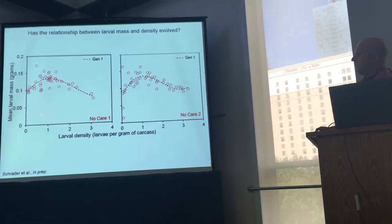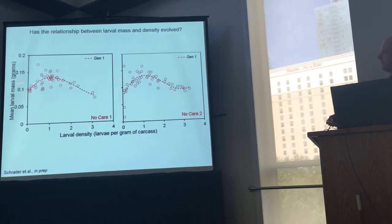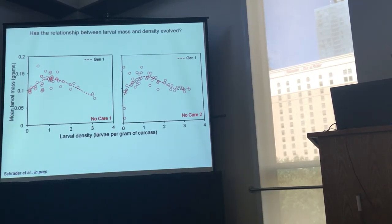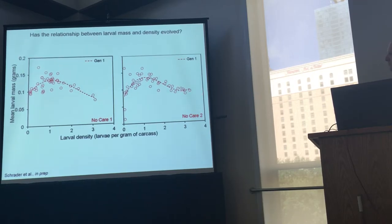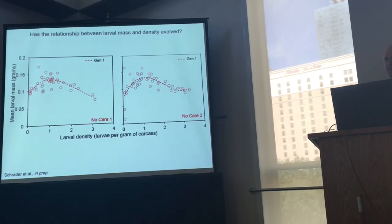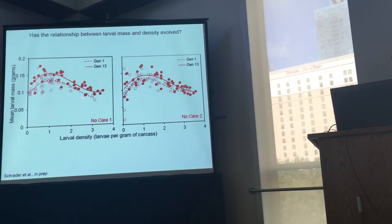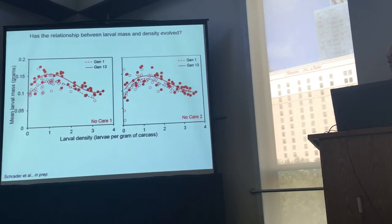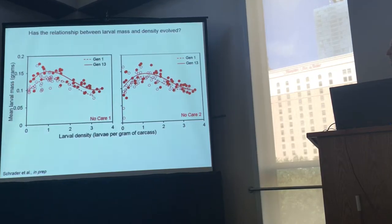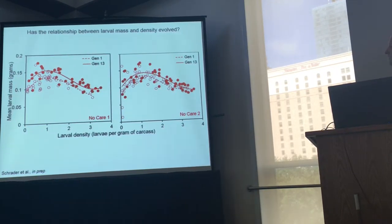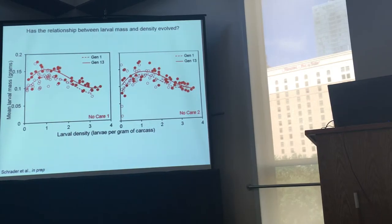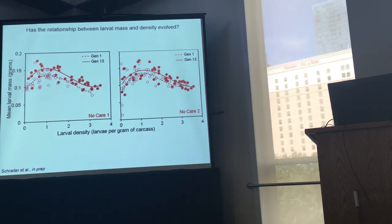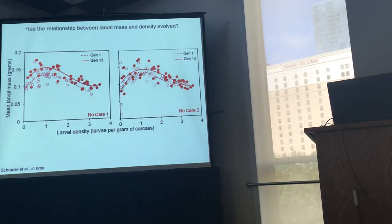To look at that, I've just plotted — I did this last week — mean larval mass against larval density in the first generation of the experiment. This is the same hump-shaped relationship we described in the paper last year. I then compared it to the relationship we see in generation 13. What we see is that there actually has been a shift — it looks like a shift in the intercept of the reaction norm. This is generation 1 here and generation 13 for the first set of replicate lines, and this is really clear in the first replicate. We see the same pattern in the second replicate, but the pattern is quite a bit messier and the height change isn't quite so extreme.